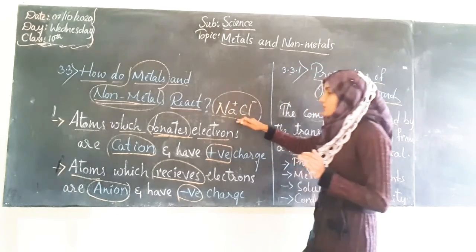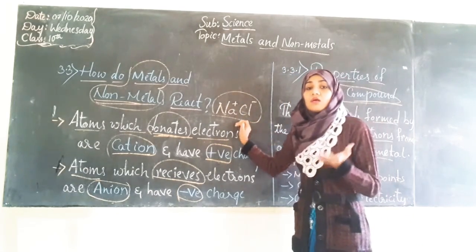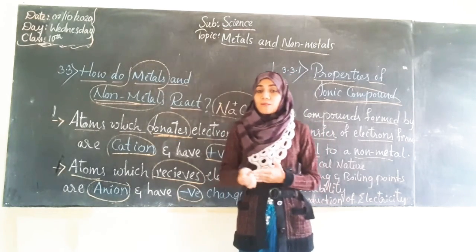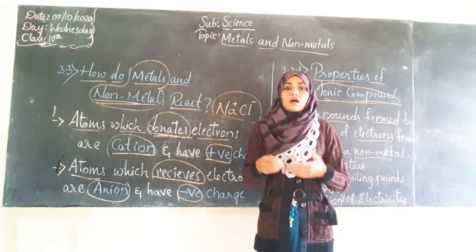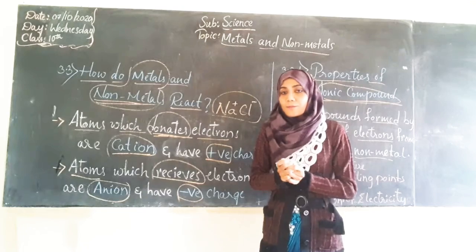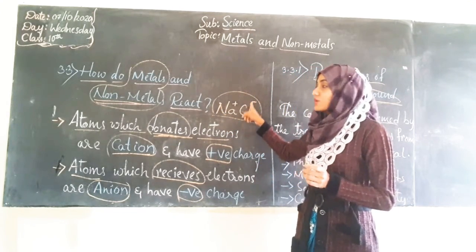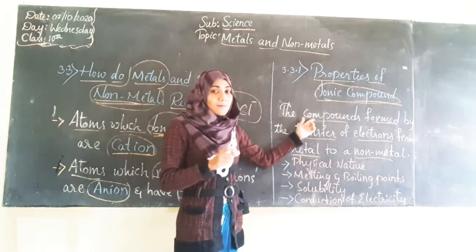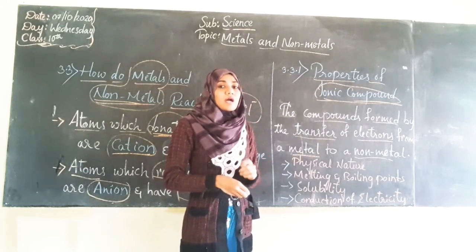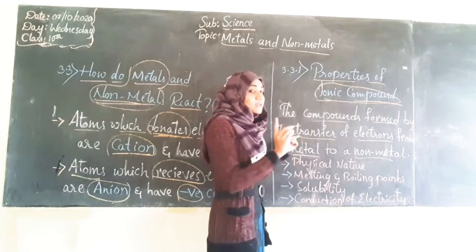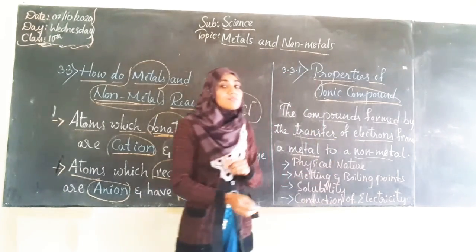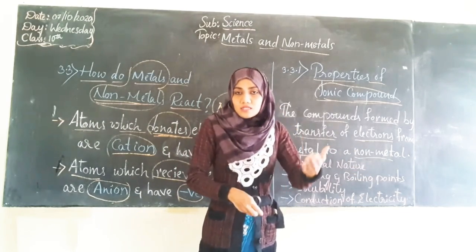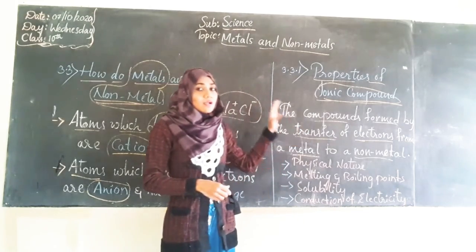You know sodium chloride — it is a compound. If two or more elements combine together, they are called a compound. Here we can see two elements combined together forming sodium chloride. Now the formation of this compound happened by the transfer of electrons from a metal to a non-metal, so it is considered an ionic compound.